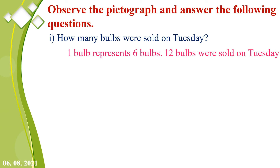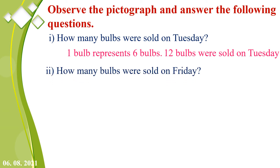Second question: how many bulbs were sold on Friday? On Friday there are 3 and a half bulbs. The half bulb represents 3 bulbs. So 3 into 6 we get 18, and 18 plus 3 we get 21. Therefore, 21 bulbs were sold on Friday.